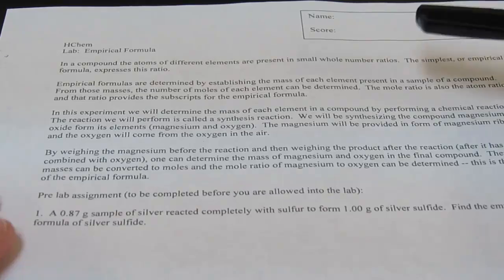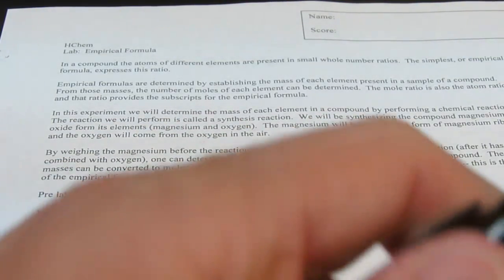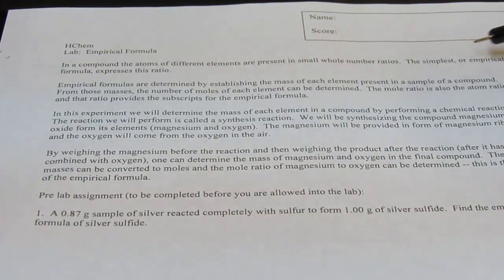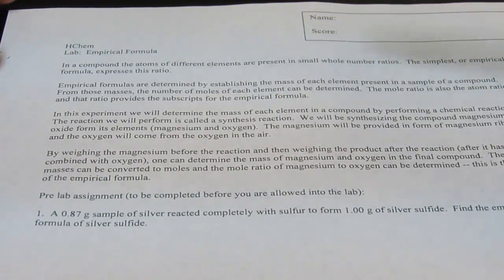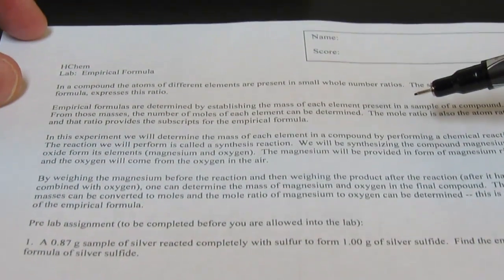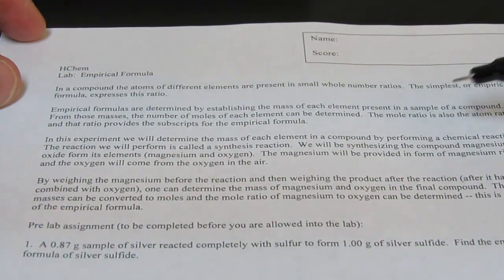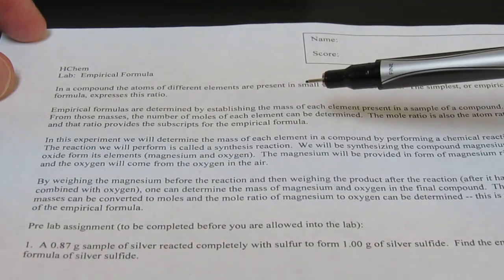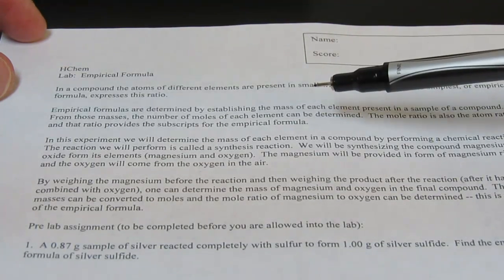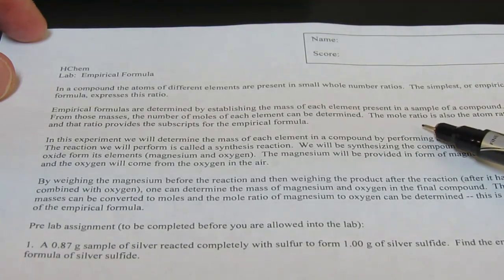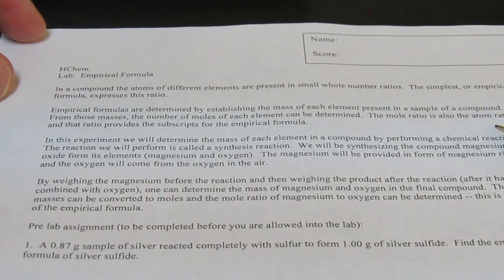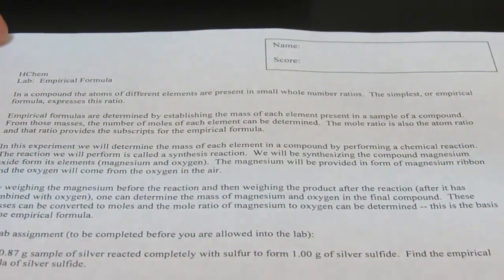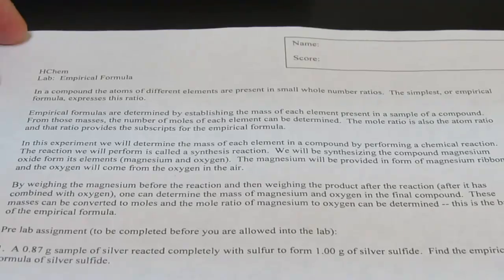In a compound, the atoms of different elements are present in small whole number ratios. The simplest or empirical formula expresses that ratio. Empirical formulas are determined by establishing the mass of each element present in a sample of a compound. From those masses, the number of moles of each element can be determined. The mole ratio is also the atom ratio, and that ratio provides the subscripts for what we call the empirical formula.